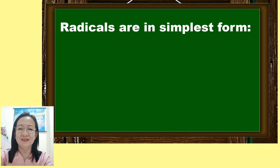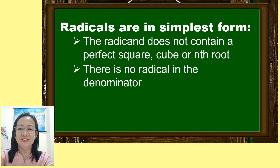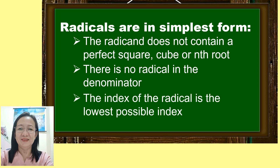In my previous video lesson, I discussed that radicals are in the simplest form if the following properties are observed: one, if the radicand does not contain a perfect square, cube, or any given index; another, there is no radical in the denominator or no fraction in the radical sign; and lastly, the index of the radical is at its lowest possible index. Among these, our main focus of discussion is to put the denominator outside the radical sign by rationalizing it.